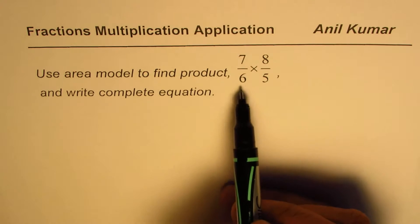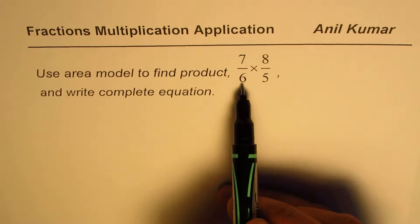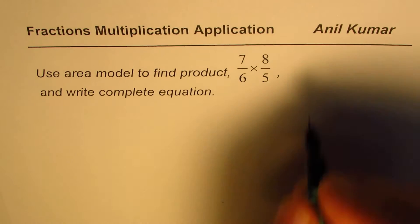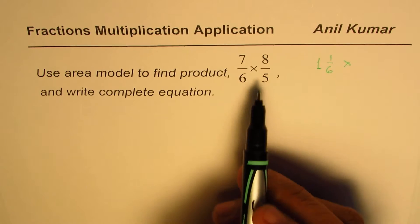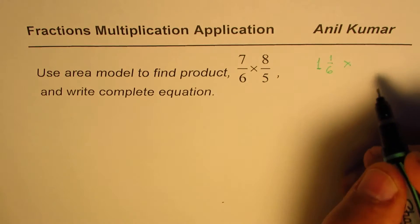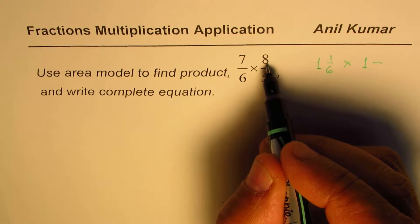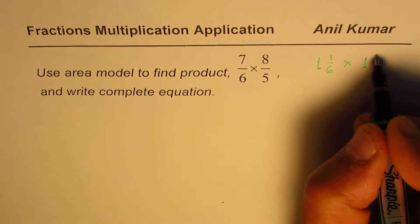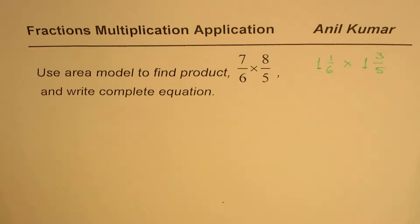Now Raneem, as you see these fractions are improper fractions. 7/6 is more than 1. 7/6 is 1 and 1/6, right? This is 1 whole and then 1/6. And we have to multiply that by 8/5, which is 1 whole. When you divide 8 by 5, you get 1, remainder is 3, so 3/5. So these are improper fractions which you need to multiply.